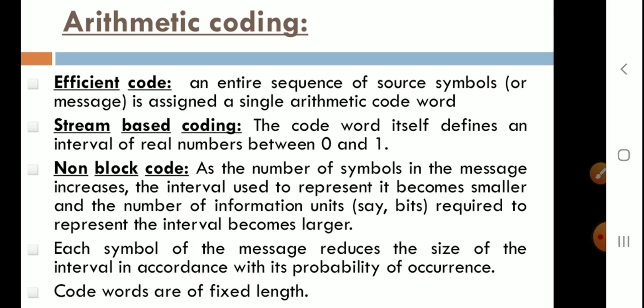Good afternoon students. In this lecture on digital image processing, the next topic is arithmetic coding, which is a lossless compression method. The first important point about arithmetic coding is that it provides an efficient code, meaning an entire sequence of source symbols is assigned a single arithmetic code word, which is then transferred to the receiver. All symbols occur within the range of 0 to 1, so it is also called string-based coding.